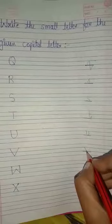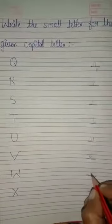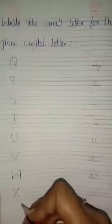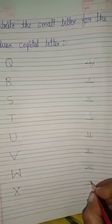And how do we write small V? Like this. Small letter V. This is capital letter W. And this is small letter W. This is capital letter X. And this is small letter X.